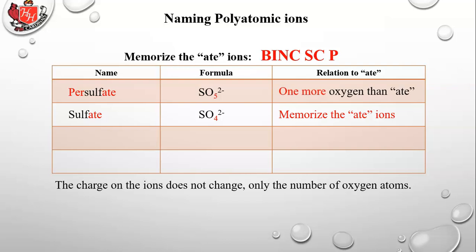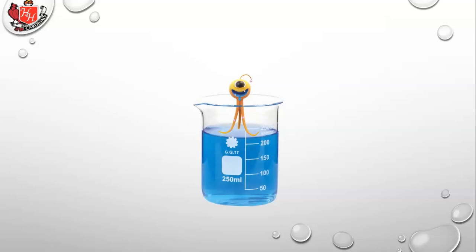Now we go down below and do one less oxygen than ate. That's SO3 2-. That's going to be sulfite with an I. And finally two less oxygens than the ate is SO2 2- and that's going to be hyposulfite. That's two less oxygen than ate.